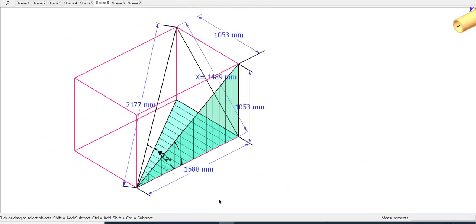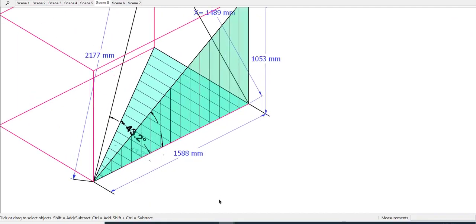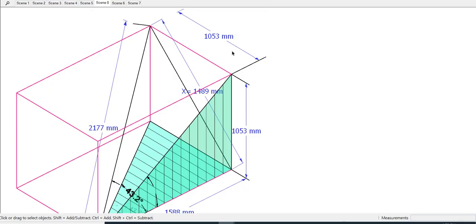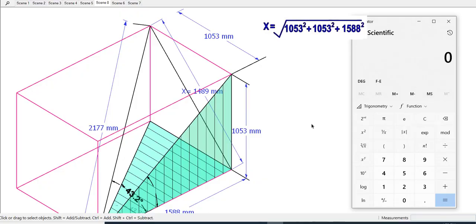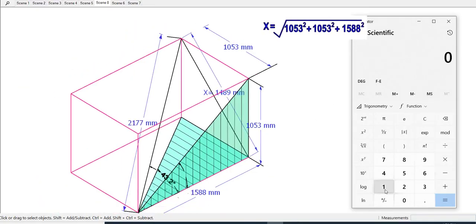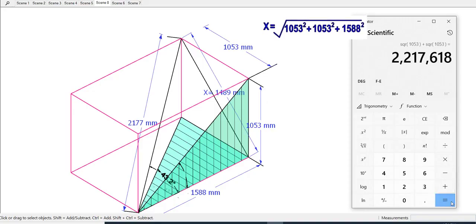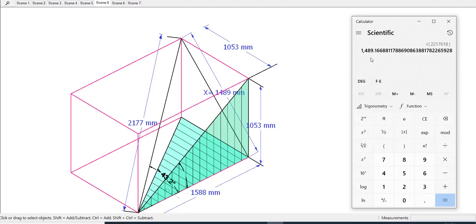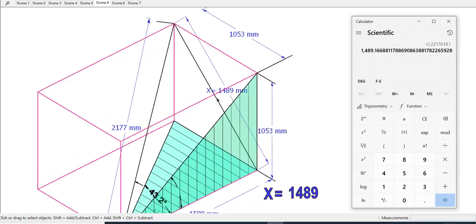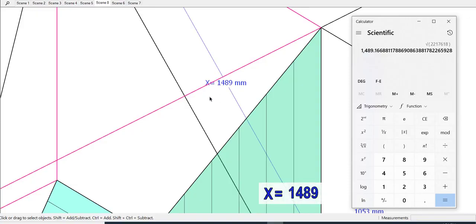I have already added the values given by the computer. Let us cross check if these values are correct. The value of X is 1489 millimeters.